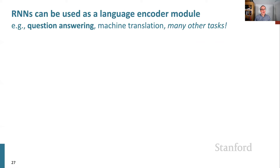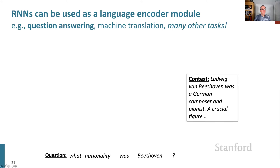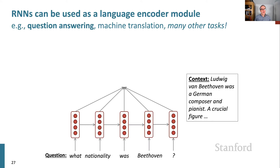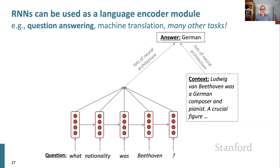Another big use of recurrent neural networks is what I'll call language encoder module uses. Anytime you have some text — for example, a question like 'what nationality was Beethoven?' — you'd like to construct a neural representation of it. One way is to run a recurrent neural network over it, then either take the final hidden state or some function of all the hidden states and say that's the sentence representation. You can do the same thing for context in question answering, building more neural net structure on top. What we've built so far gives us a sentence representation — it's a language encoder module.